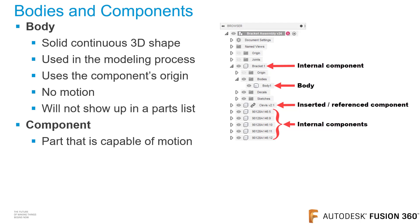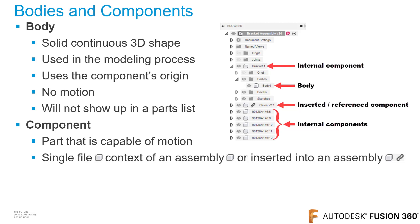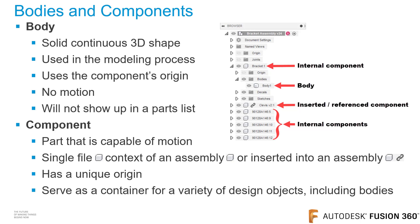A component is a part that is capable of motion. Assembly joints can be used to position two components together. In the browser, a component is listed as a single cube, and a component can also be inserted into an assembly file — a link symbol will appear to the right of the cube. A component has a unique origin and serves as a container for a variety of design objects including bodies, sketches, and features. A component will appear in a parts list.